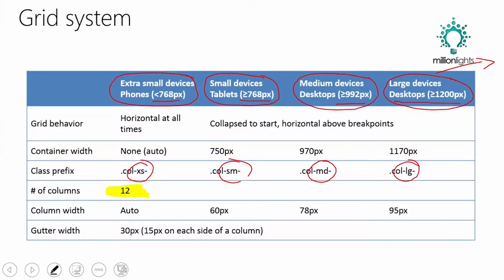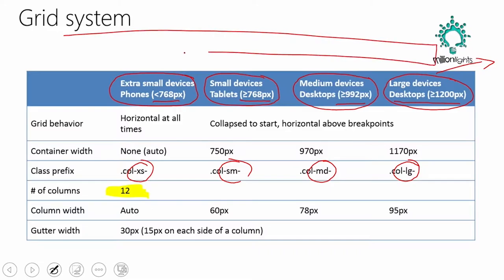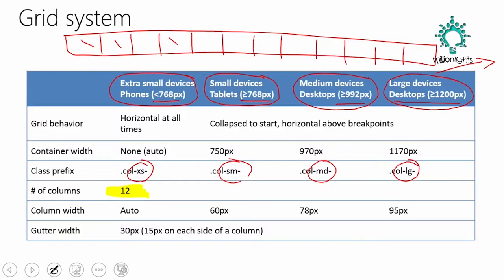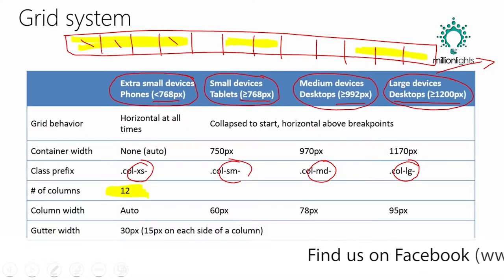The next big thing to notice is the number of columns. The number of columns is always going to be 12. In that little grid, you always have 12 columns to work with. You could go in and change that — in theory, yes — but don't. Just leave it the way it is. You can identify how many columns wide you want something to be — if you want to take up 4 columns, 3 columns, 2 columns, you can specify that. It's always going to be 12 columns.